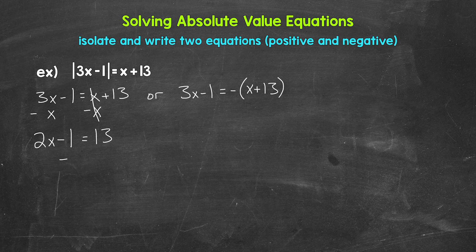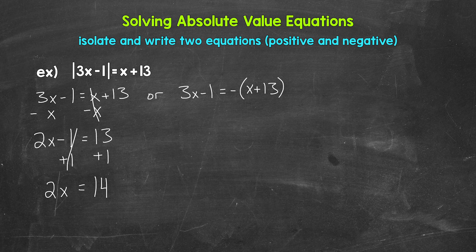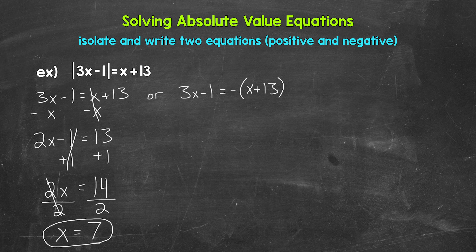So we need to isolate the variable x. Let's undo the subtraction by adding one to both sides. These ones cancel each other out, so we have 2x equals 13 plus one, which gives us 14. So now we have 2x equals 14. Let's undo that multiplication by dividing both sides by two. These twos cancel each other out, so x is now isolated. 14 divided by two gives us 7. So x equals 7.